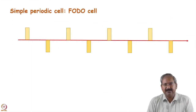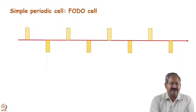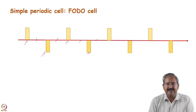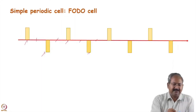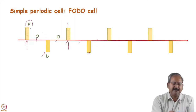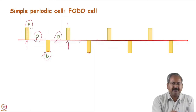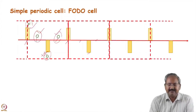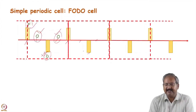Now we will analyze some optics using the tools learned so far. Consider a simple optics: focusing quadrupole, then drift space, then defocusing quadrupole, then drift space — repeated periodically. This is called a FODO cell (F = focusing quadrupole, O = open drift space, D = defocusing quadrupole, O = open drift space). In this figure, four such cells are repeated, and they may continue in this pattern.